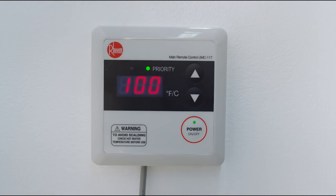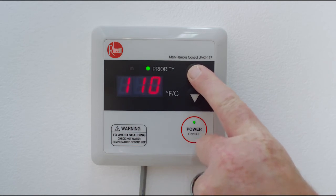The remote will beep and a green light will appear. The remote will display 100 degrees the first time you turn it on. Press the up arrow button to adjust to desired temperature.